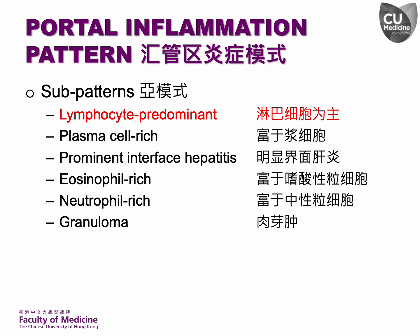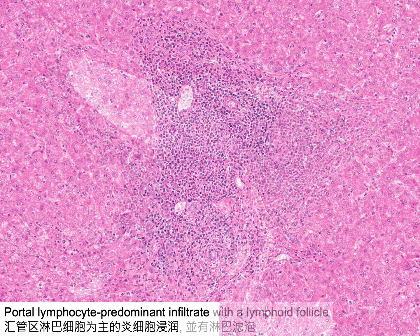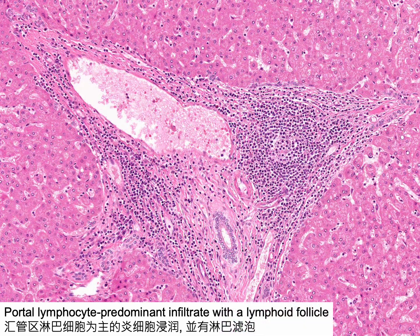The first sub-pattern is lymphocyte predominant portal inflammation. This portal tract is expanded by a moderate amount of inflammation, predominantly composed of lymphocytes. This portal tract is expanded by a moderate inflammatory infiltrate primarily composed of lymphocytes, along with a reactive lymphoid follicle.